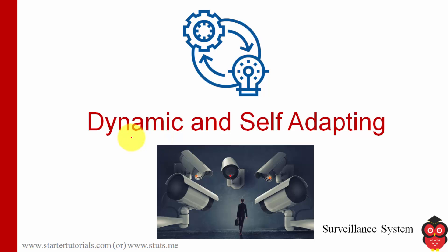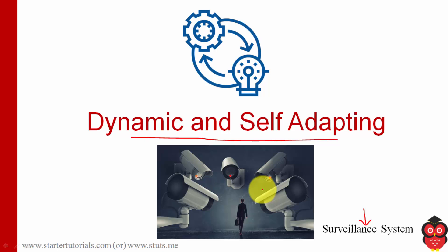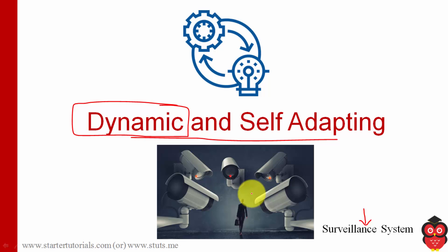The first characteristic is dynamic and self-adopting. As an example, I am considering a surveillance system where a set of cameras will be monitoring the environment. What is the dynamic part? Whenever there are no objects in front of the camera, the camera will be sleeping — it will be in a low power mode. But whenever an object comes before the camera, it will turn on itself and monitor the object. This is the dynamic behavior.